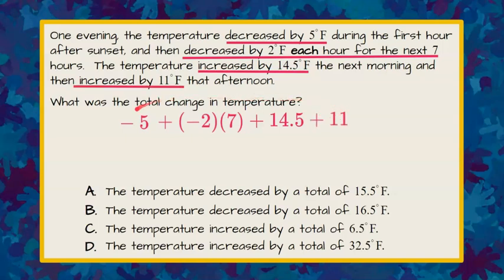Now we're all done, we just need to find the total change. So we're going to add all these values together. The first thing I'm going to do is my multiplication. Negative 2 times 7 is negative 14.